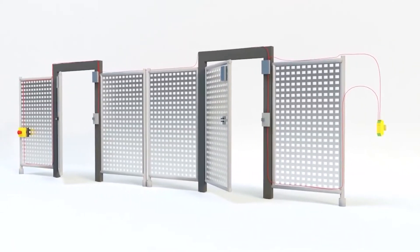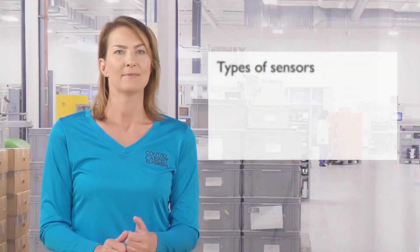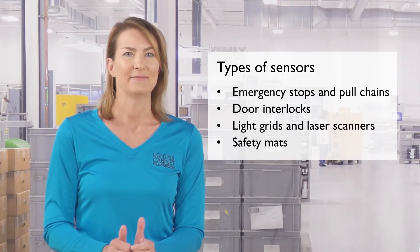So let's start with safety inputs. For most machine applications, safety sensors are used to initiate the safety function, which is typically a power down or safe state off. There are a multitude of different safety applications, but some of the most common sensors are emergency stops and pull chains, door interlocks, light grids and laser scanners, and safety mats. Most of these sensors are used to ensure that no one is in a hazardous area by guarding the entrances, but emergency stops are unique as they are used when an unsafe situation has started or hazardous energy needs to be immediately stopped. Remember, you should always select the correct sensor based on industry standards for your application.